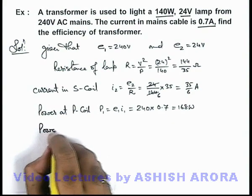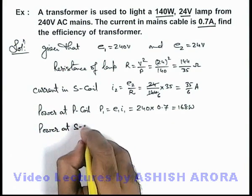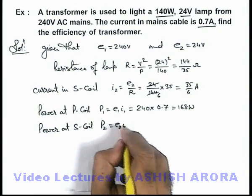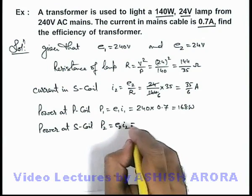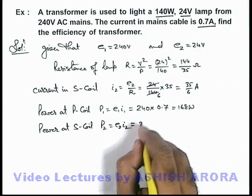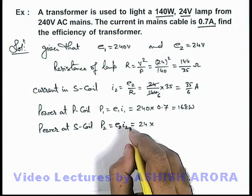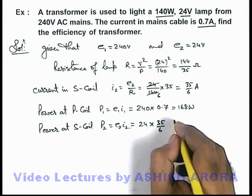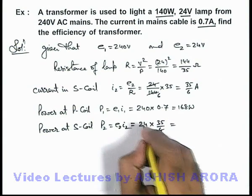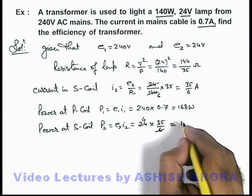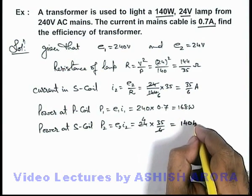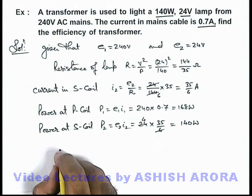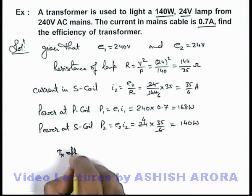And if we calculate the power at secondary coil, which is being delivered to the lamp, which is P2, it can be written as E2 I2. And E2 we know it is 24 volt, and the current which is being consumed by the lamp is 35 by 6 ampere. And here this is 4, so the power which is consumed by the bulb is 140 watt in this situation.